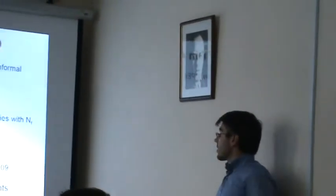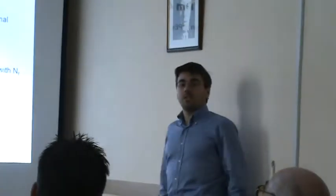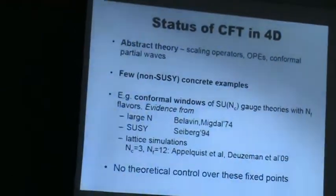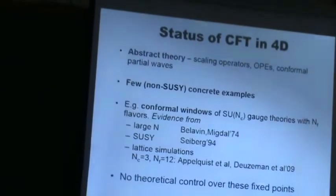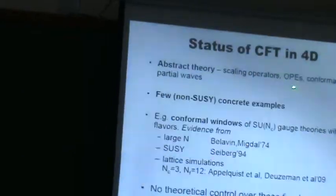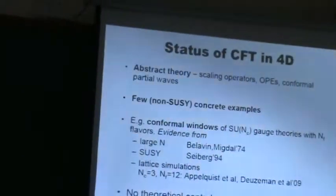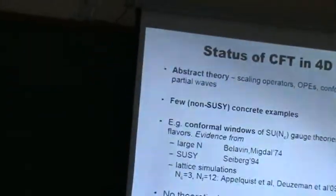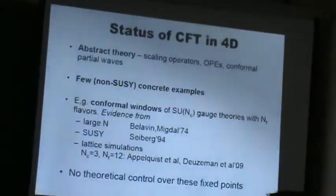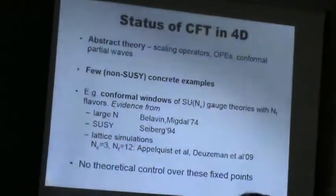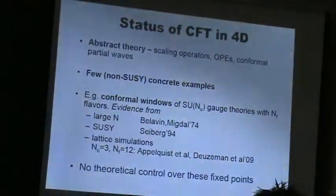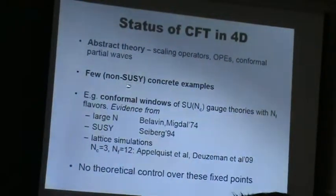As a small introduction: what do we know about conformal field theory in four-dimensional quantum field theory? We know a lot of abstract theory constructed in the 70s — we know the notions of scaling operators, operator product expansion, conformal partial wave decomposition — but the trouble is that all this beautiful theory is essentially laying there without much implication, because we have very few known examples of conformal theories, apart from supersymmetric examples.